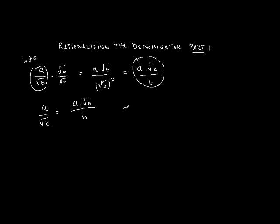A numerical example: if I have 3 divided by the square root of 2, I can multiply the top and the bottom by the square root of 2, and that gives me 3 times the square root of 2 divided by the square root of 2 squared, and that's just 2. So the result is 3 times the square root of 2 over 2.